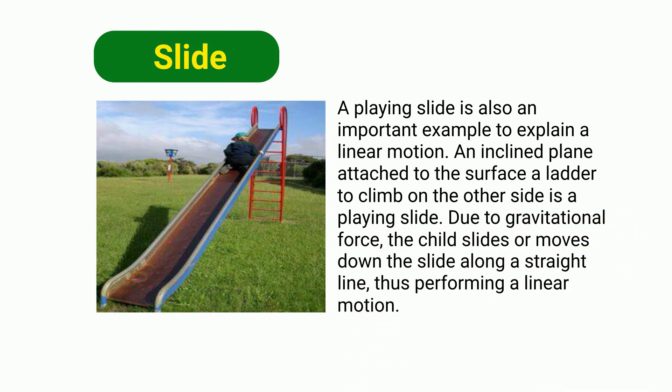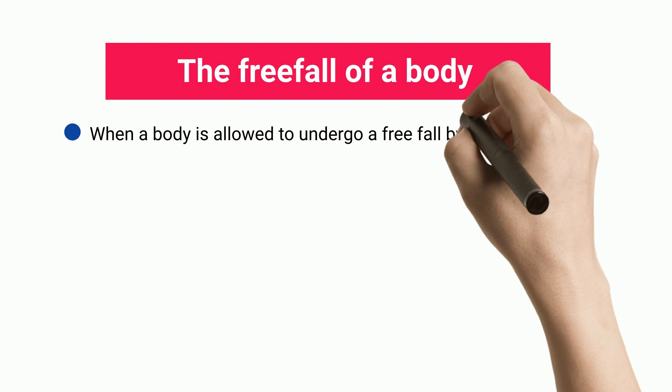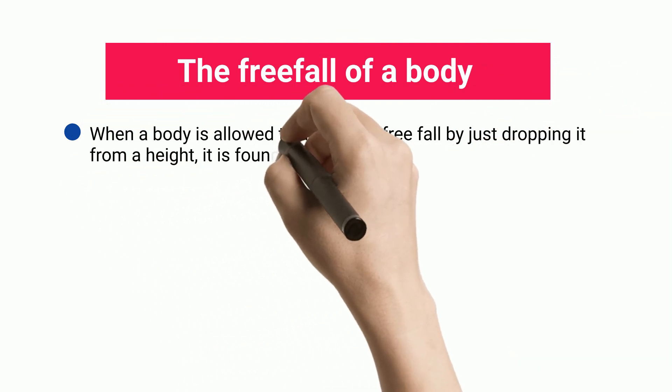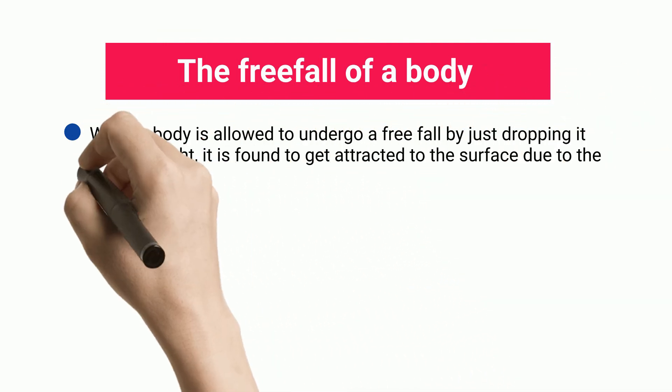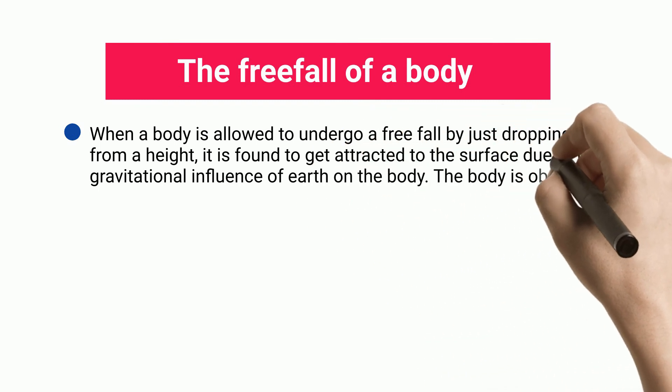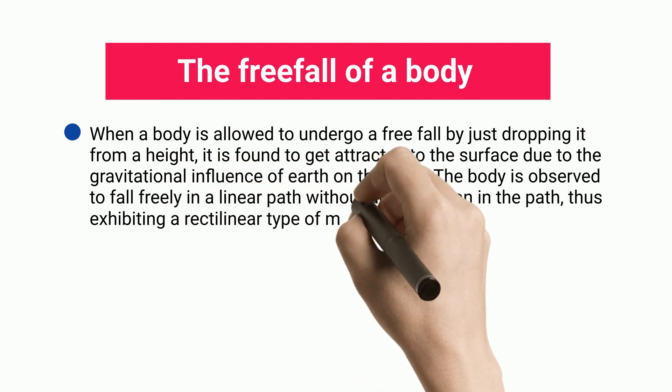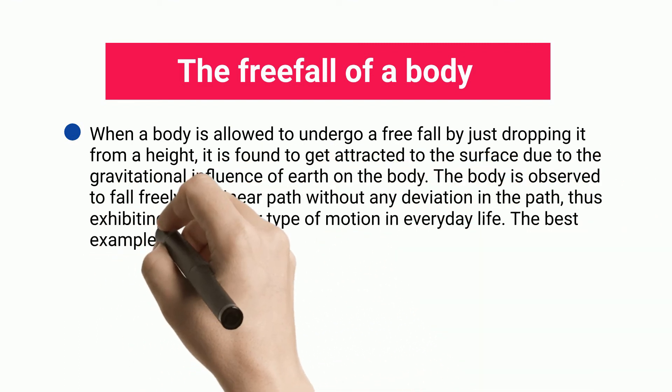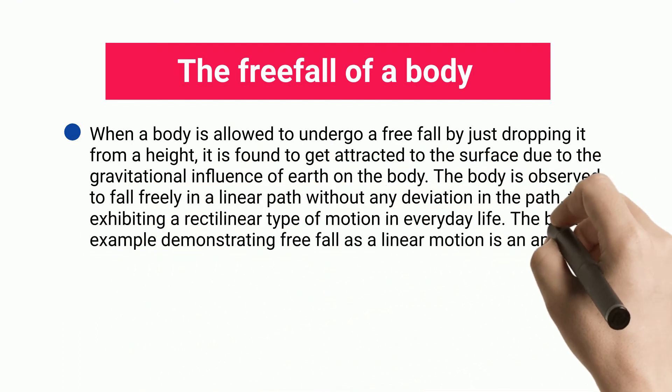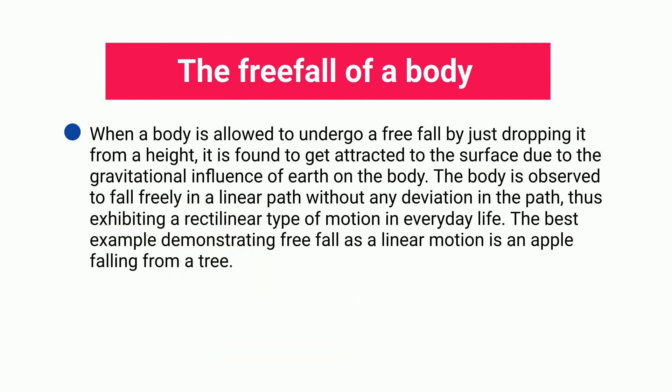The free fall of a body: when a body is allowed to undergo a free fall by just dropping it from a height, it is found to get attracted to the surface due to the gravitational influence of Earth on the body. The body is observed to fall freely in a linear path without any deviation in the path, thus exhibiting a rectilinear type of motion in everyday life. The best example demonstrating free fall as a linear motion is an apple falling from a tree.